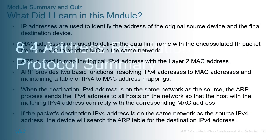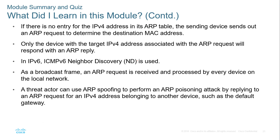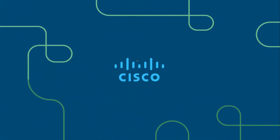That's it for this chapter. We talked about physical and logical addresses — Layer 2 MAC addresses (physical) and Layer 3 IP addresses (logical). We discussed how ARP allows us to find the MAC address corresponding to a known IP address. We looked at ARP operating on IPv4 networks, and Neighbor Discovery for IPv6 networks. We wrapped up with ARP spoofing and ARP poisoning as possible attack types. If you have any questions or concerns, please reach out.